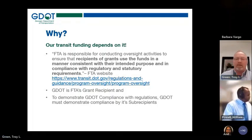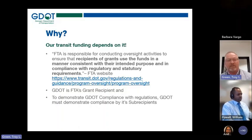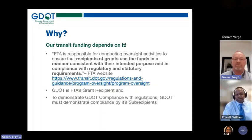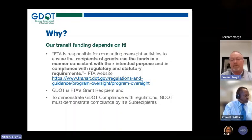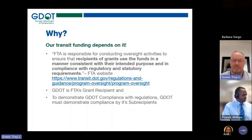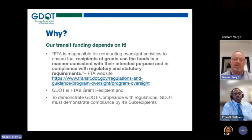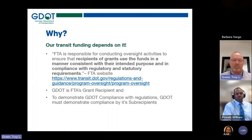Why? Our funding depends on it. FTA is responsible for conducting oversight activities to ensure that recipients of grants use funds in a manner consistent with their intended purpose and in compliance with regulatory and statutory requirements. GDOT is the FTA grant recipient and the flow-through entity for FTA funds, subbing those funds down to you the subrecipient. We must ensure you are compliant, because if you're not compliant, we're not compliant.